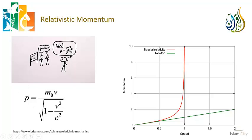When we look at what the equations of relativity tell us about momentum, we see it is similar to Newton: it is m₀ times v — mass times velocity — but divided by this gamma-like factor: the square root of 1 minus v squared over c squared. The implications of this are actually very significant.